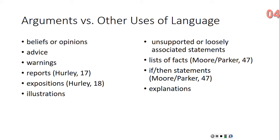A warning. "Don't touch that." That's not an argument. It's not even a statement — it's incapable of being true or false. It's basically issuing a command. Now, warnings can come in the form of a statement: "I wouldn't do that if I were you." That can be sort of a warning. But here again, we've only given a single statement. And that's the reason why beliefs, opinions, advice, and warnings aren't arguments — because they're single statements. There's no inferential relationship taking place between something we would call the premise and something we would call the conclusion.